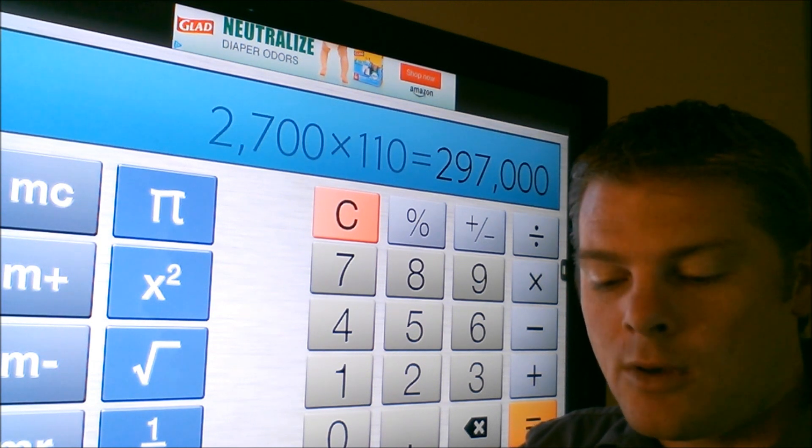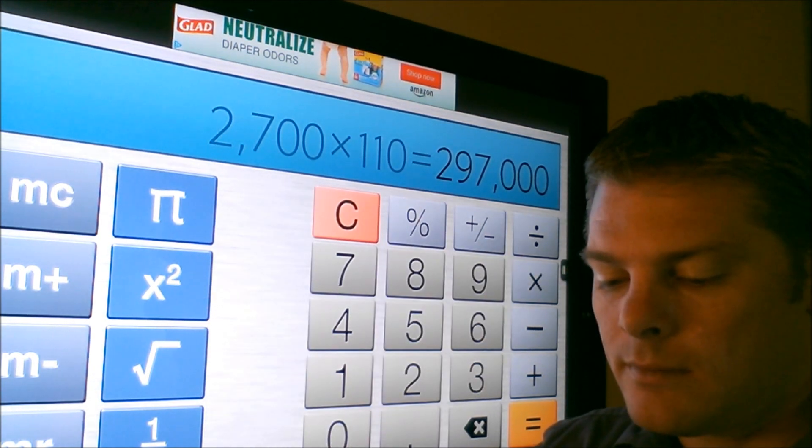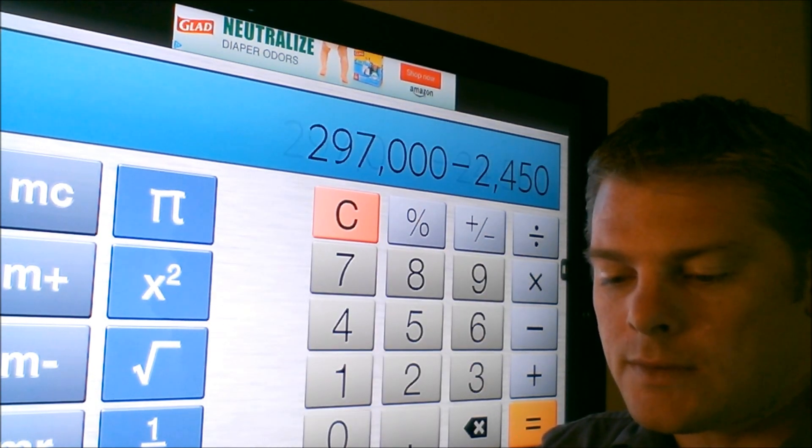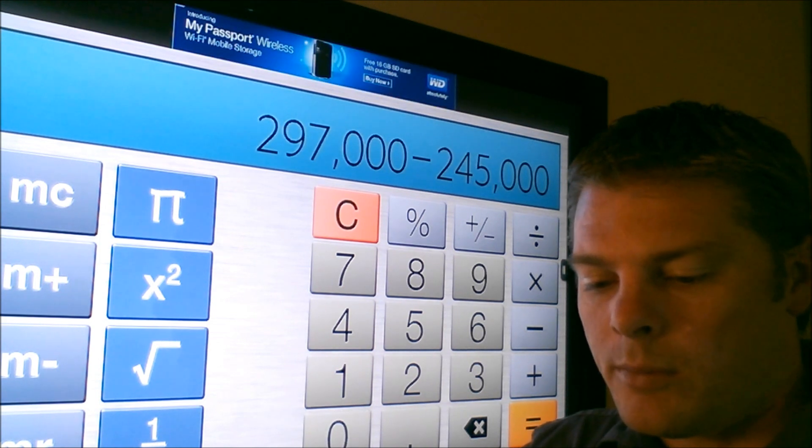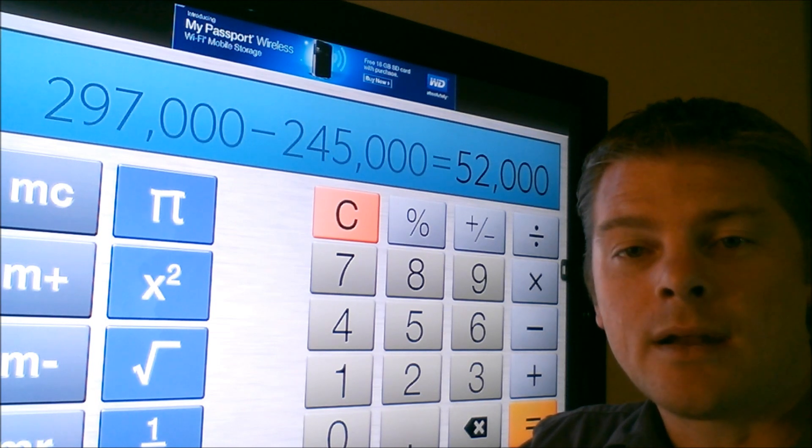All right? So it was $245,000 that they're selling it for. So $297,000 minus the $245,000 that you'd be able to buy it for. You got $52,000 equity in that house. It's a good deal. So you can pick that up.